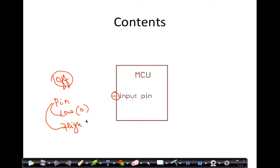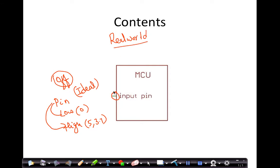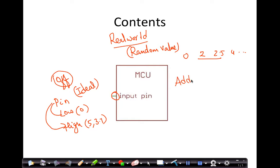Low means close to zero, and high means it can be either 5V or 3.3V or whatever. But in the real world what we observe is the value of this input pin is some random value — it can be 0, it can be 2 volt, 2.5 — it will be some random value, generally. To address this problem, we have something called a pull-up resistor. Pull-up or pull-down — pull-up is more famous.